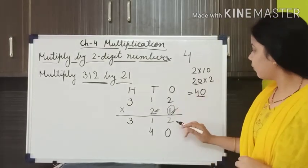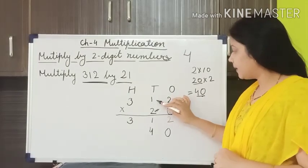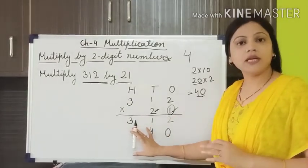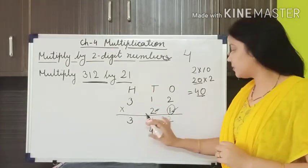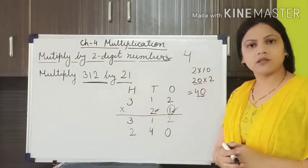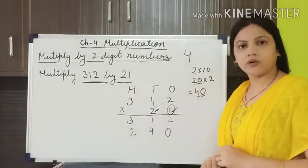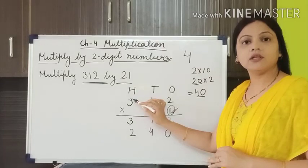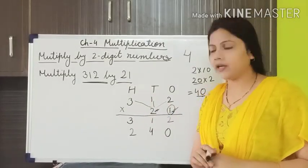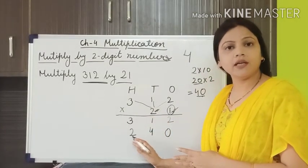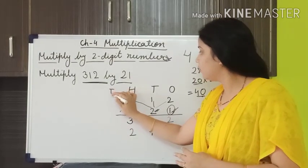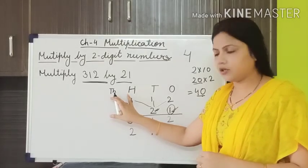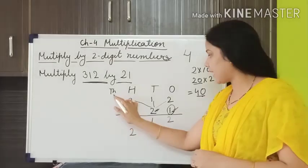Understood this? Now, 2 ones are 2. I cannot write my answer at the 10s place because I already have written there, so I will jump to the next higher place — the 100s place. 2 ones are 2, I will write at the 100s place. Now I have to multiply 2 at the 100s place: 2 threes are 6. I cannot write 6 here because a number is already written. So I have to make a new place — after 100s comes 1000s. So I will write 6 at the 1000s place.